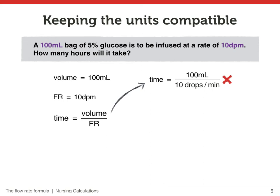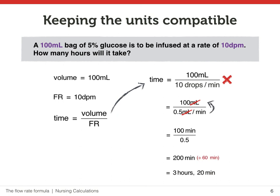We could turn 100 mils into 2000 drops, or we could change the 10 drops into half a mil. Either of these will bring us to the same answer. I will turn the 10 drops into mils, so we have mils in the formula. This allows for the mils to be cancelled. The minutes are at the bottom of the denominator and they get flipped to the top again, and minutes is clearly the unit that our answer will be in. 100 divided by a half is 200 — that is 200 minutes — and 200 minutes is 3 and a third hours, or 3 hours and 20 minutes.